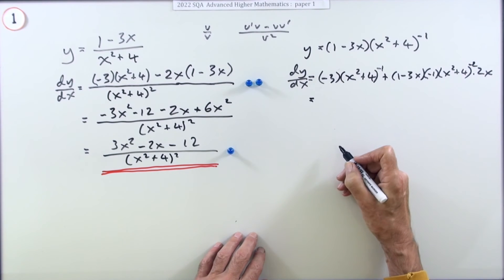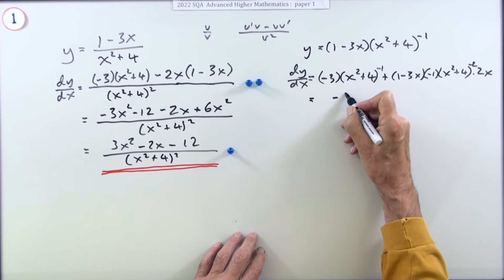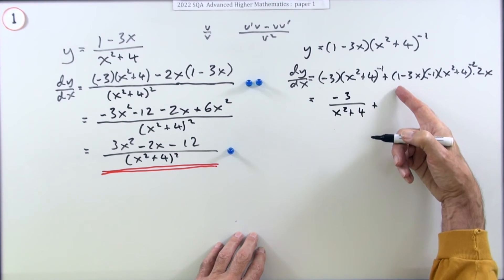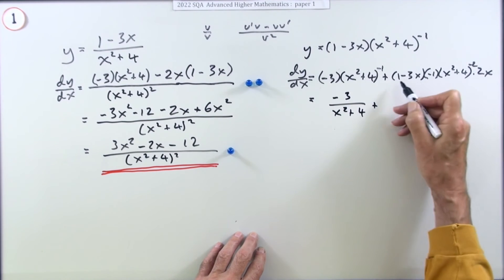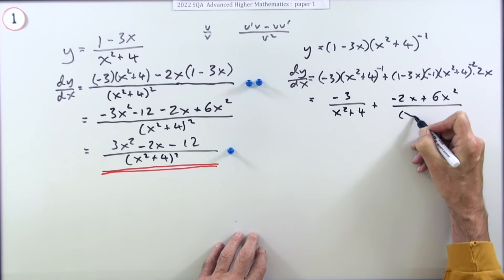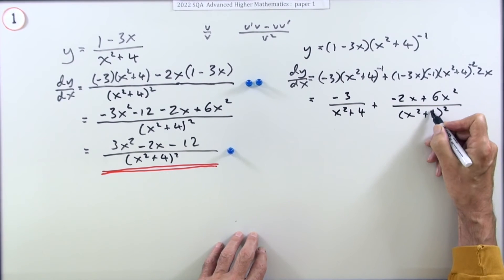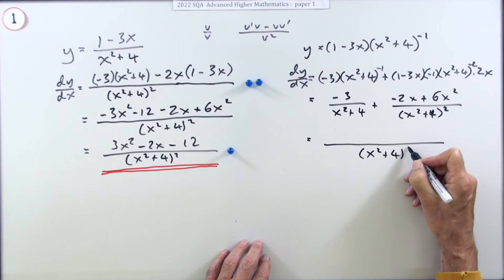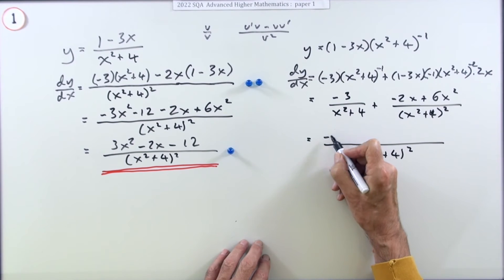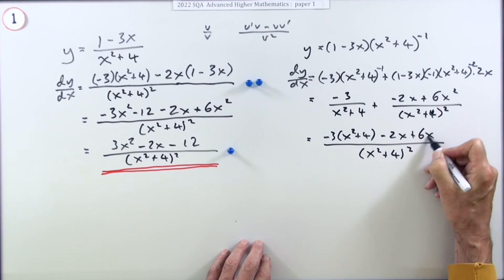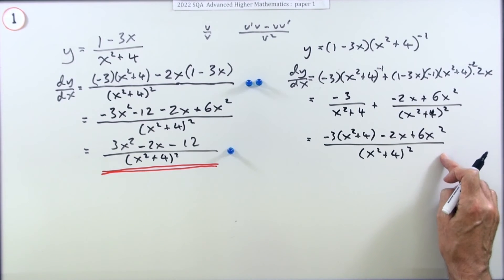So it'll be times negative 1 of that inner part multiplied by the derivative of the inner part, power negative 2. At this point I could reconstruct the fraction. That part would be negative 3 over x squared plus 4, and this part would be, I could tidy this up, I've got a negative there and a negative negative, so that's plus 6x squared minus 2x all over x squared plus 4 squared.